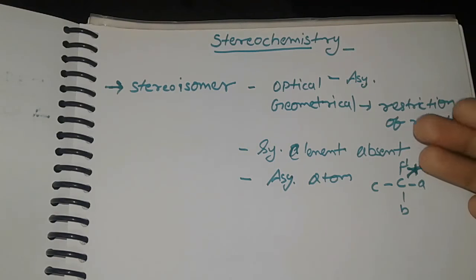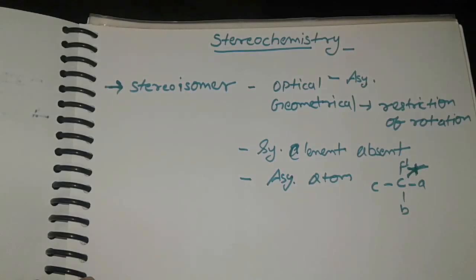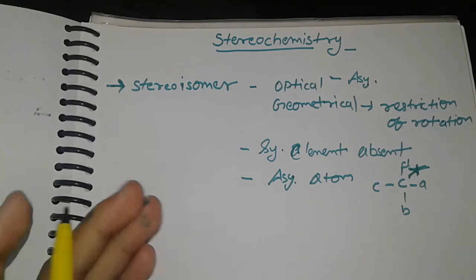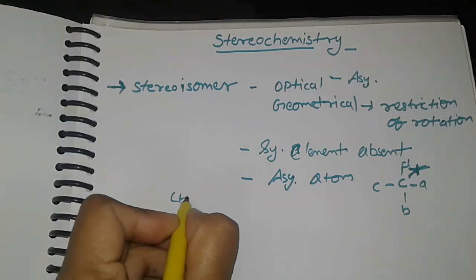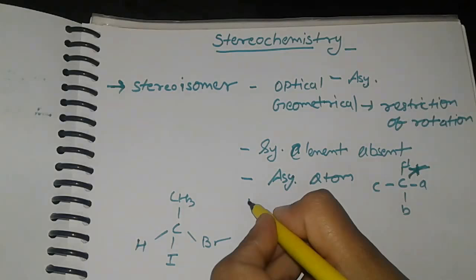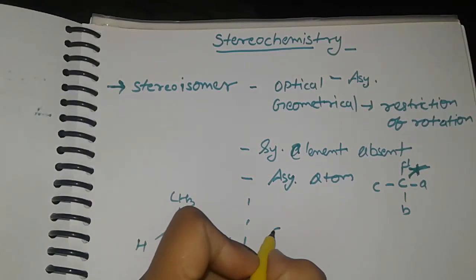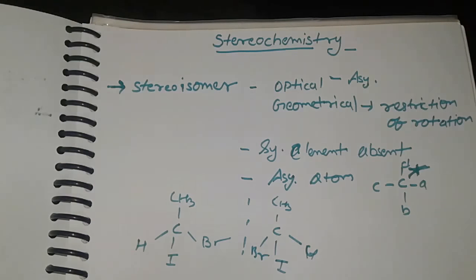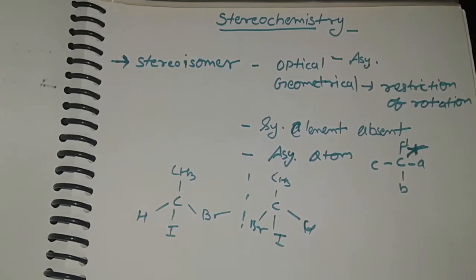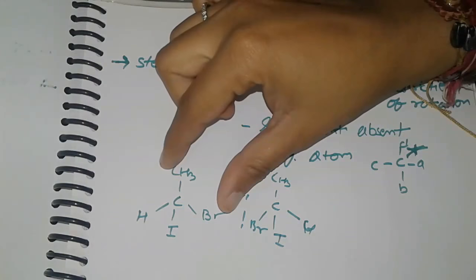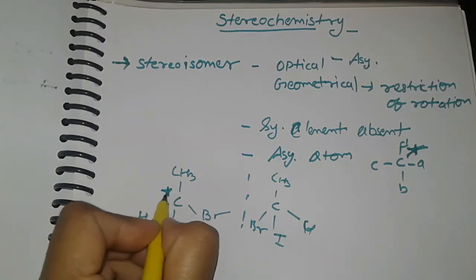Second thing is that optical stereoisomers show mirror images which are non-superimposable. If we make the mirror image of this molecule, these two mirror images are non-superimposable with each other, meaning they cannot be placed directly on top of each other. Therefore, this molecule will be optically active, and this is a chiral carbon.